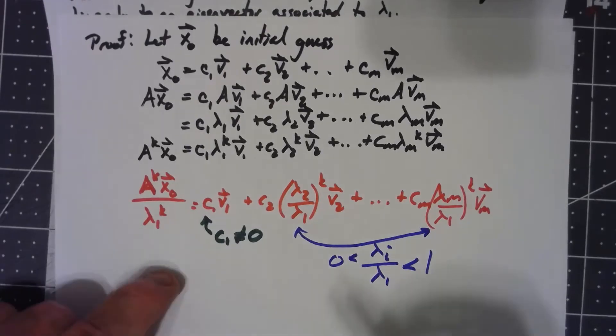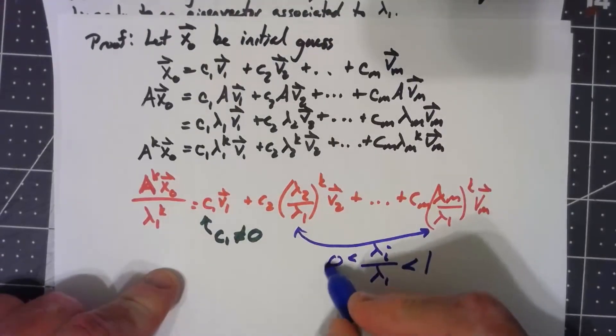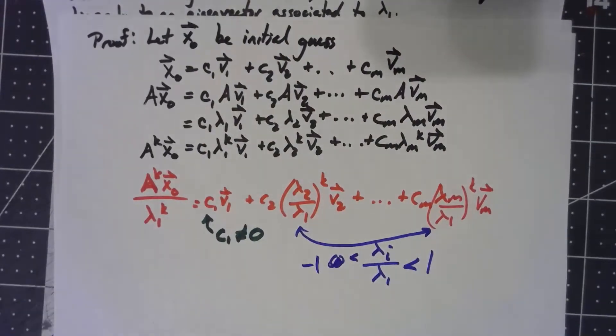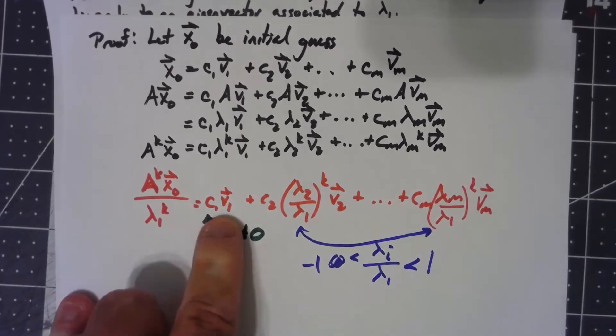Actually, I'll be a little careful here. The absolute values are smaller, so this thing has to be between negative 1 and 1. It doesn't change what I said though; these all have to go to zero. So as long as c_1 is not equal to zero, we're converging to c_1 v_1.